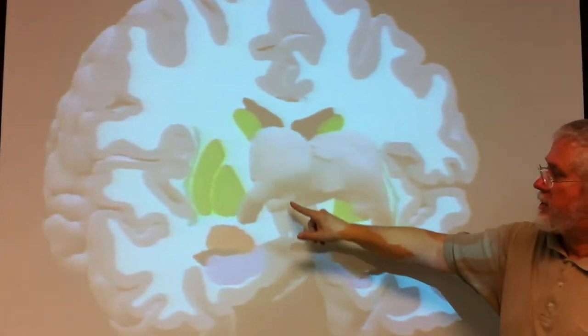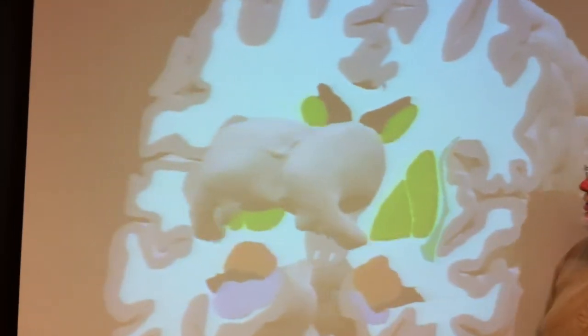This is just the thalamus. So this is lateral geniculate, medial geniculate. Medial geniculate. Is this grey matter? That would be right here.